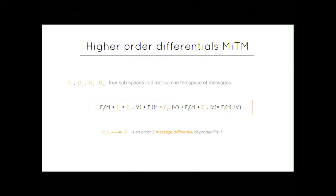So now we will no longer have two subspaces but now four: d1, d2, d3, d4, and we will ask for every delta 1, delta 3 in d1, d3 that for every message this equation is fulfilled. Which means in the language we just introduced that delta 1, delta 3 to 0 is an order 2 message differential of probability 1. Here you can notice that we take an output difference of 0. We can do it with non-zero difference but it will make the equation a bit longer so for sake of simplicity we use that case.